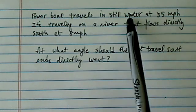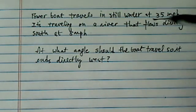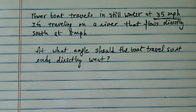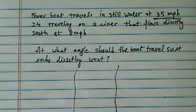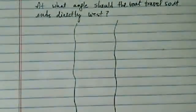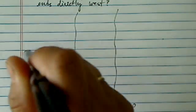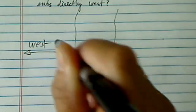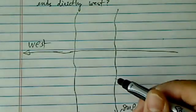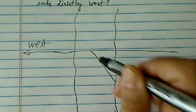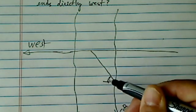We were given that a power boat travels in still water at a speed of 35 miles per hour and is traveling on a river that flows directly south at 8 miles per hour. So I'm drawing a picture over here, and we want to end up due west. The question asks, at what angle do we travel so that we end up due west?